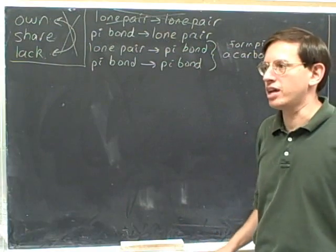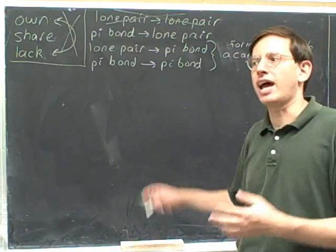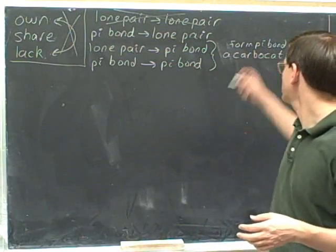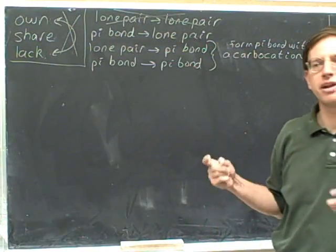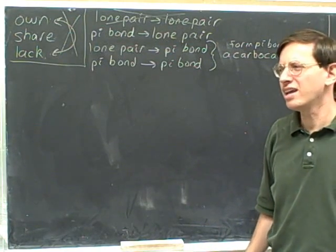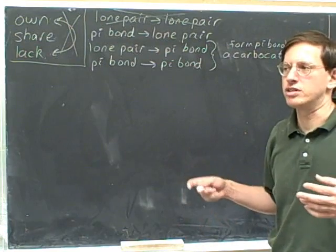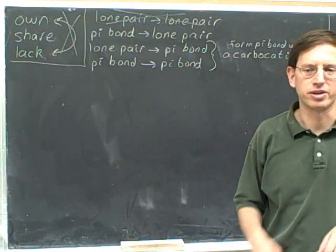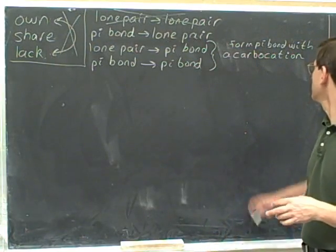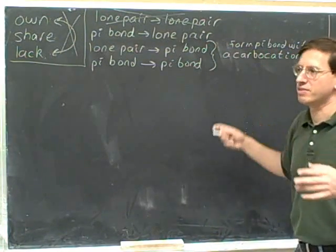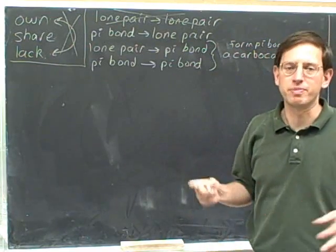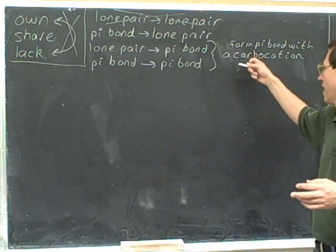Technically it would also be okay to form a pi bond with any other atom that had an incomplete octet. But any other atom with an incomplete octet forming resonance structures hardly ever comes up in organic chemistry — it's so rare we're really not going to worry about it. So except for carbocations, that's really never going to come up, and we're just going to focus on carbocations.